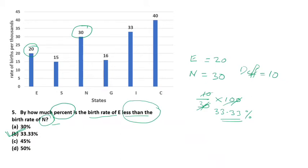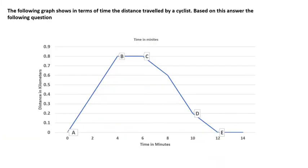The next question is based on a line graph. The graph shows the distance traveled by a cyclist in terms of time. The x-axis shows time in minutes and the y-axis shows distance in kilometers. The cyclist starts from point A at time zero with distance zero, reaches point B, then C, D, E, and the graph goes up to 14 minutes. Based on this we have to answer some important questions.